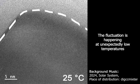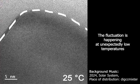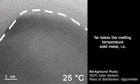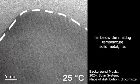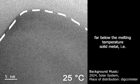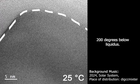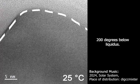The fluctuation is happening at unexpectedly low temperatures, far below the melting temperature of the solid metal — approximately 200 degrees below the point of liquidity.